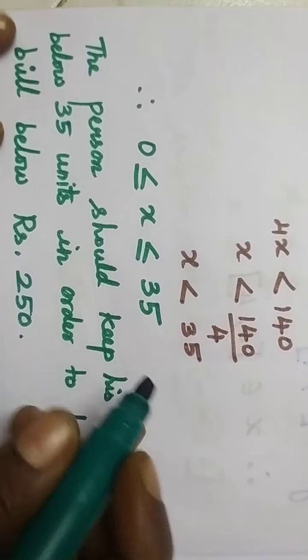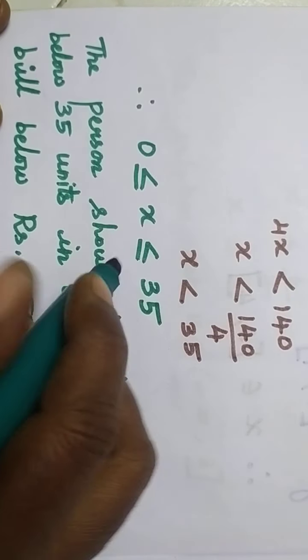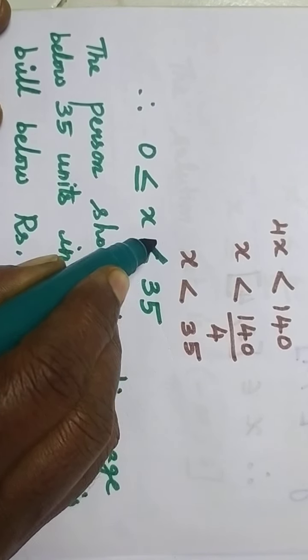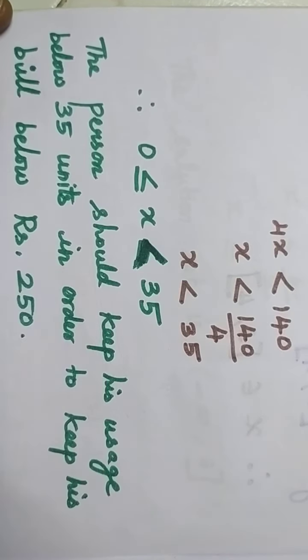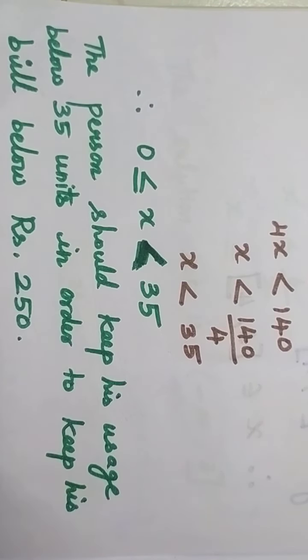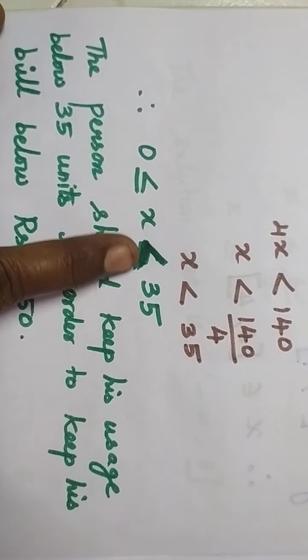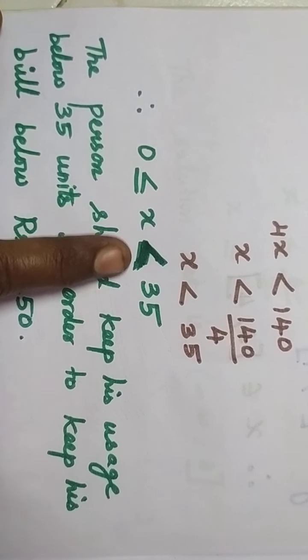Since it should be below 35, there should not be an equal sign. It should be strictly below 35, so I will get only the less than symbol. You should use the less than symbol, so x is between 0 and 35, but it should be less than 35. 35 will not have an equal sign.